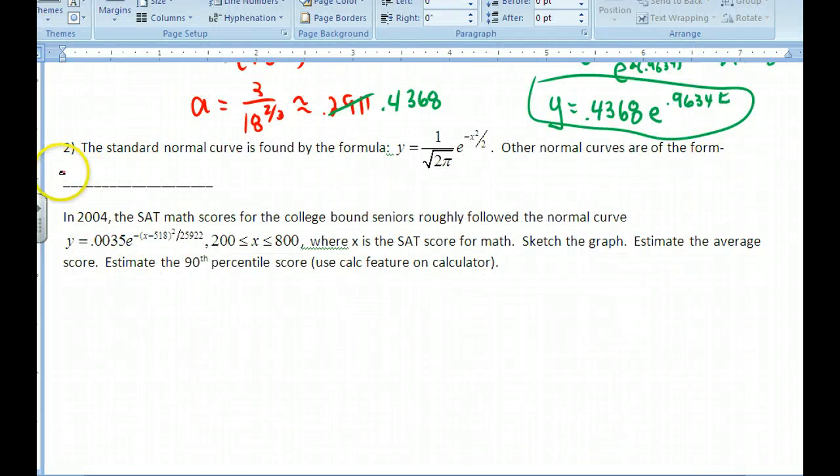Now for the SAT, they use normal curves, but they're of a little bit different form. The form that they use is y = some initial value times e^[-(x - h)^2 / b]. This one is centered around the y-axis. So if I go x - h here, that h is going to tell you what you're going to be centered around. In 2004, the SAT math scores followed this normal curve. If you look up here, x - 518. Think about what that might do to your normal curve. We only have values from 200 to 800 because it becomes negligible after those things. This is for the SAT scores. X is the SAT score. Sketch the graph and estimate the average score.